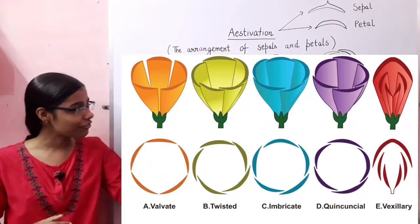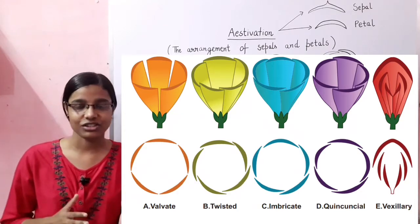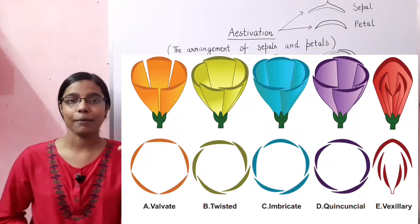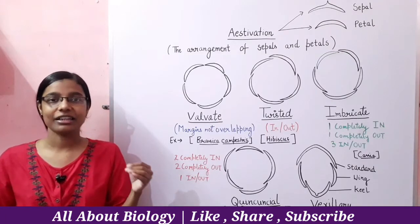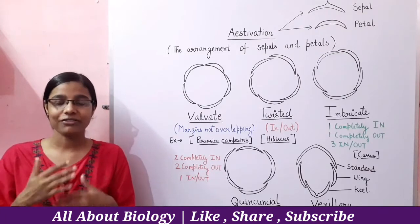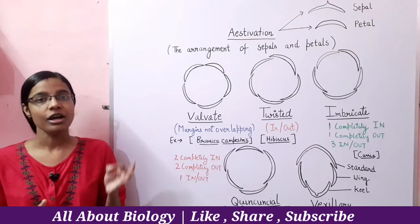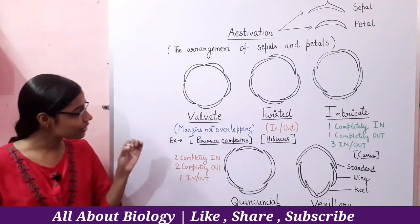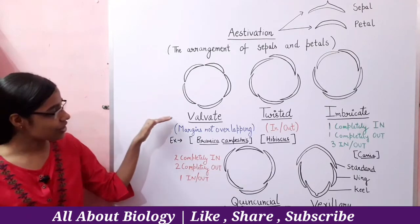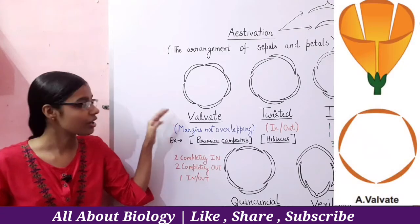There are 5 different types of Estivations that you should know about, so that when you study different taxonomic families, you will find it easy to understand. The first Estivation is Valvate Estivation.